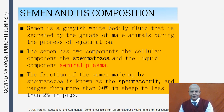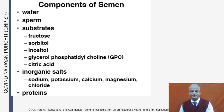Semen is a grayish-white bodily fluid secreted by the gonads of male animals during ejaculation. It has two components: the cellular component — the spermatozoa — and the liquid component — the seminal plasma. The fraction of semen made up by spermatozoa is known as the spermatocrit, ranging from more than 30% in sheep to less than 2% in pigs.